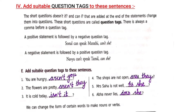A positive statement is always followed by a negative question tag. For example: 'Sonal can speak Marathi' is a positive statement, so it must be followed by a negative question tag — 'Sonal can speak Marathi, can't she?' And a negative statement is followed by a positive question tag. For example: 'Navya can't speak Tamil, can she?' Because there is always a comma before a question tag.